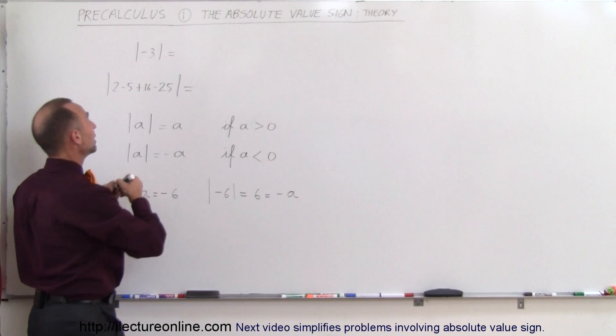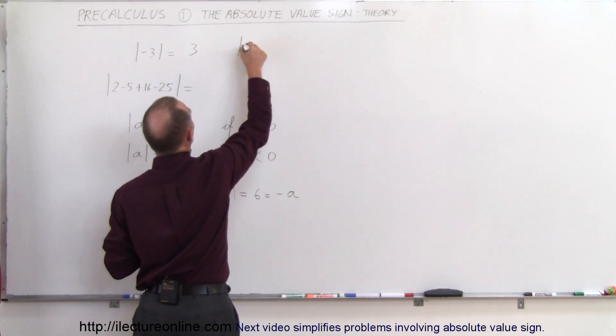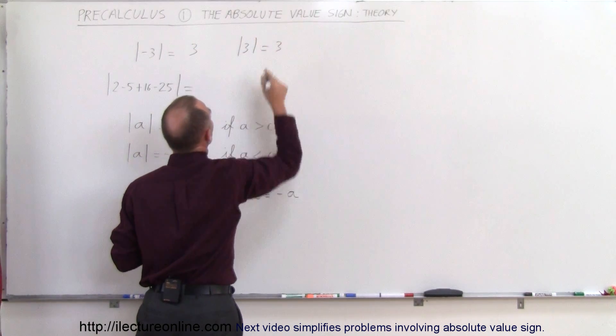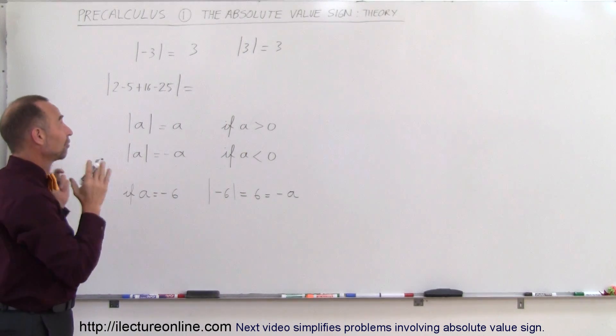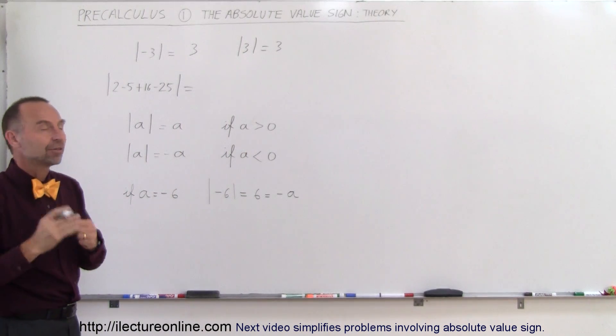So if the number is negative 3, we write 3. If we take the absolute value of 3, that is also 3. It doesn't matter if the number is positive or negative, the absolute value of that will always be the positive value.